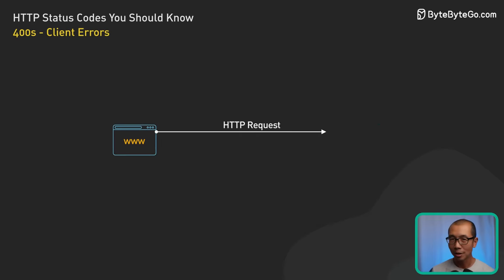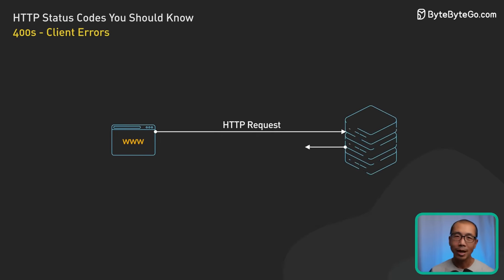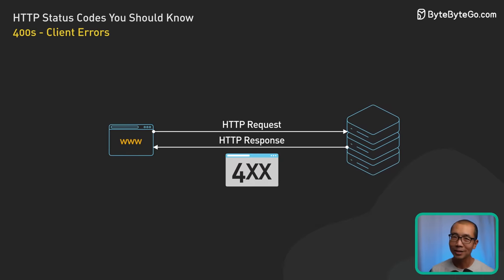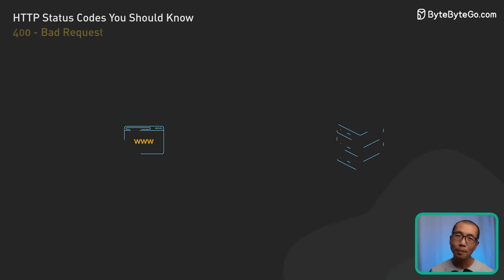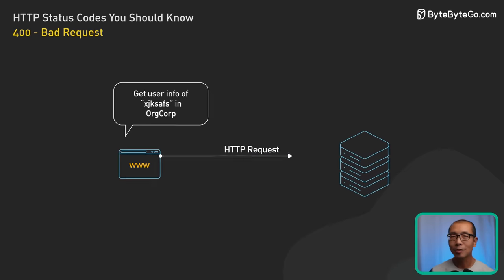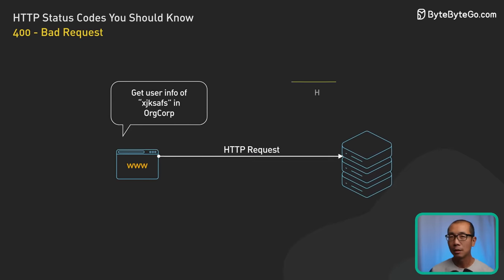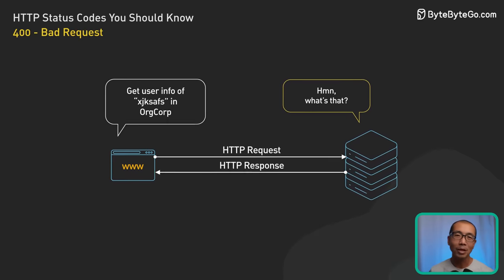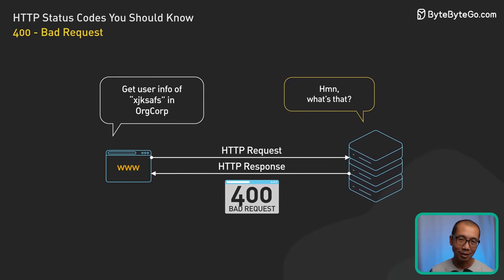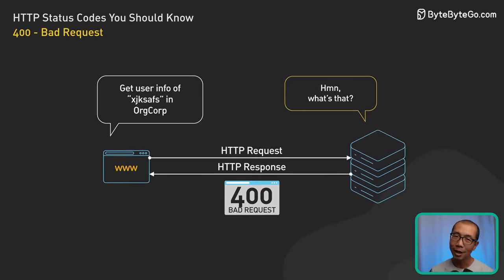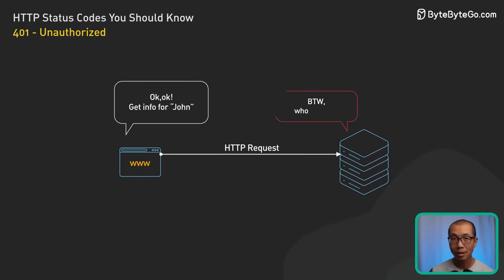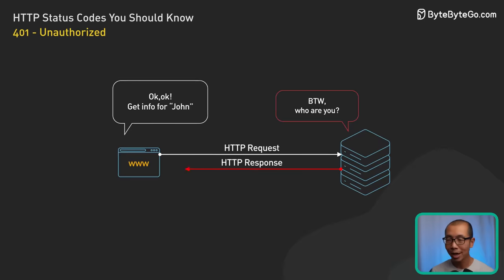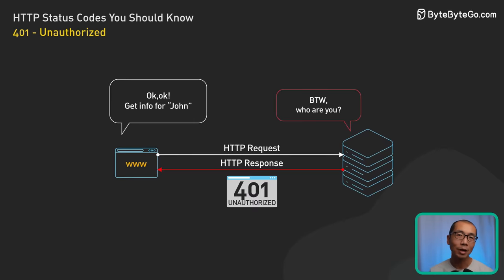Now to the 400s, the codes that say hey, you goofed up. These are the server's way of saying check what you sent me. A 400 Bad Request is like the server asking what is this — something in our request just doesn't make sense. A 401 Unauthorized means we are missing the right credentials, like trying to get into a locked room without the key.